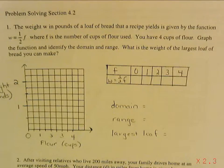The answers are posted in the answer packet and if you turn the page there's also a QR code so you can find another video, but I will do the first one for you. This says the weight w in pounds of a loaf of bread that a recipe yields is given by the function w equals one half f.